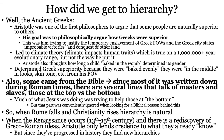Aristotle was trying to justify the temporary enslavement of Greek prisoners of war. In the ancient world, enslavement was based on losing in a war — it was about nationality, not race, and it was never hereditary like the enslavement you might know of in the Americas. The Greek city-states had small armies and kept winning, so Aristotle kept saying 'clearly we're better,' and therefore Greeks should be at the top of the hierarchy.